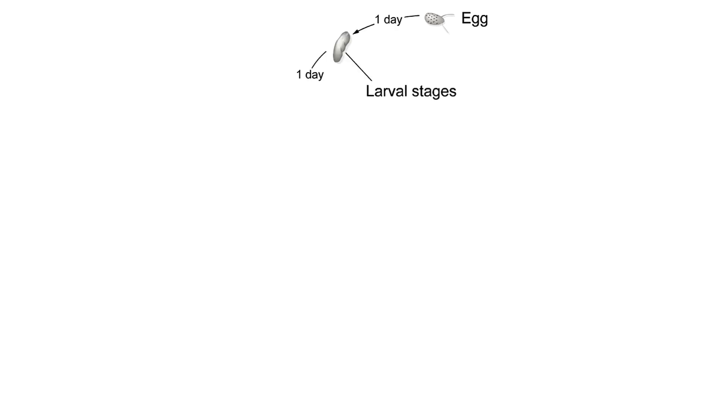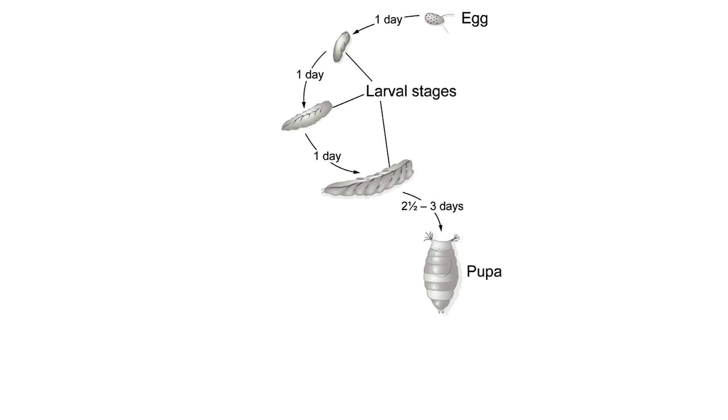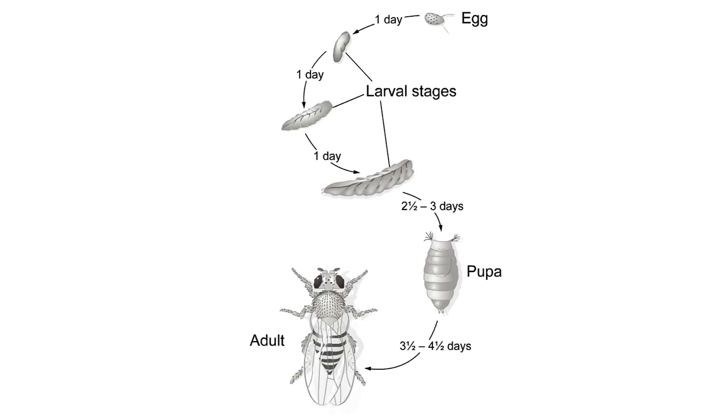Let's talk about the genetics of Drosophila development — the genes involved in axis determination and body pattern determination. A full cycle of development of Drosophila, from fertilized egg through three larval stages and a pupal stage to the adult, takes 10 to 12 days at 25 degrees Celsius.